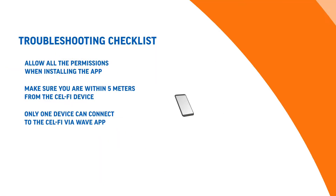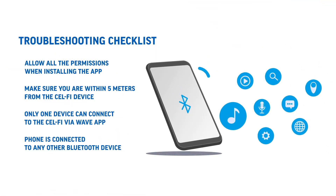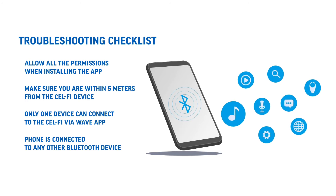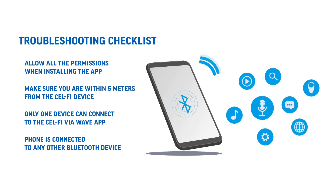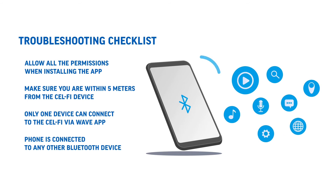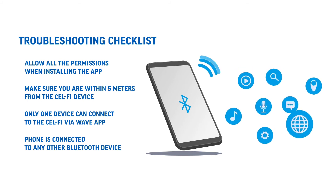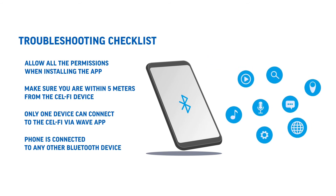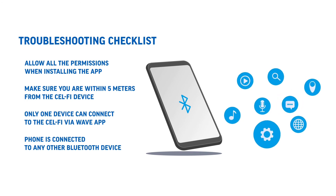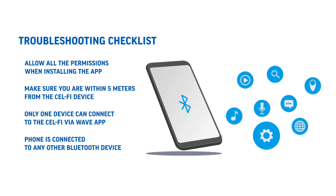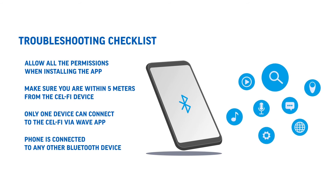The last thing to check is the phone itself. It may be connected to another Bluetooth device like a Bluetooth headset. Some phones do not support multi-device Bluetooth connections, so you need to disconnect the other Bluetooth device first and then try the Wave app — that should get it connecting again.